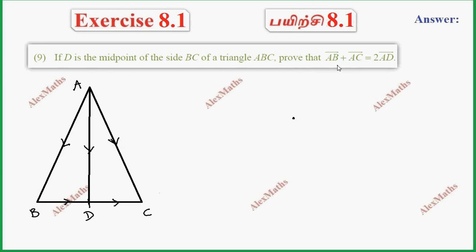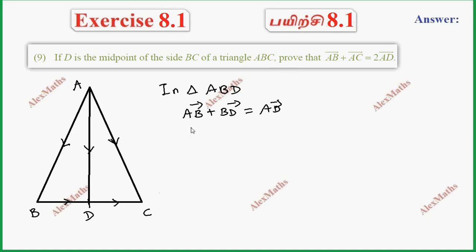Now we have AB vector. In triangle ABD, AB vector plus BD vector equals AD vector. This is the first expression.